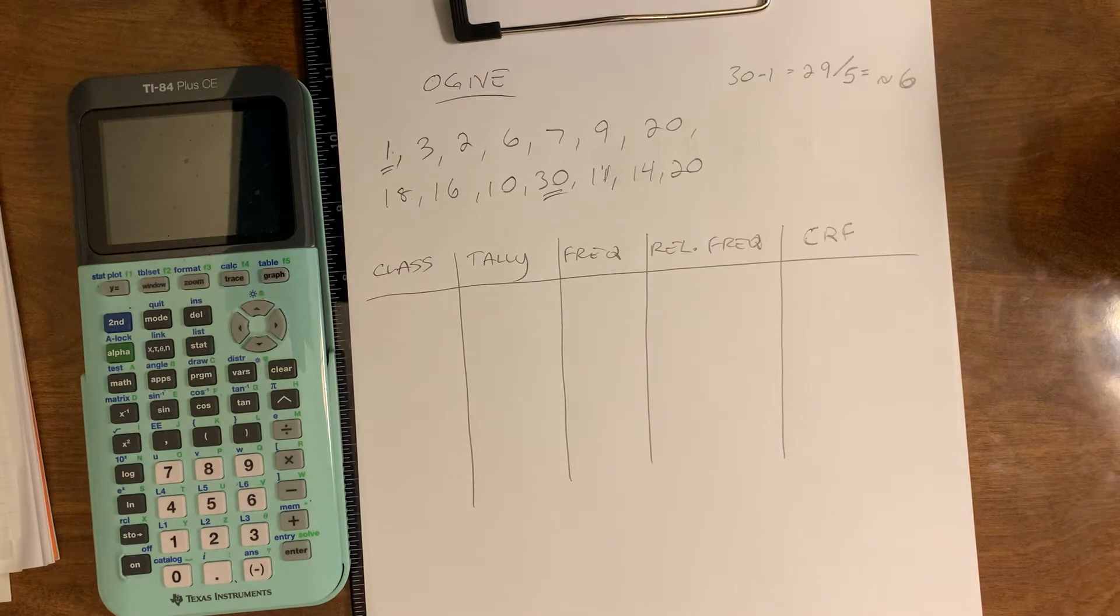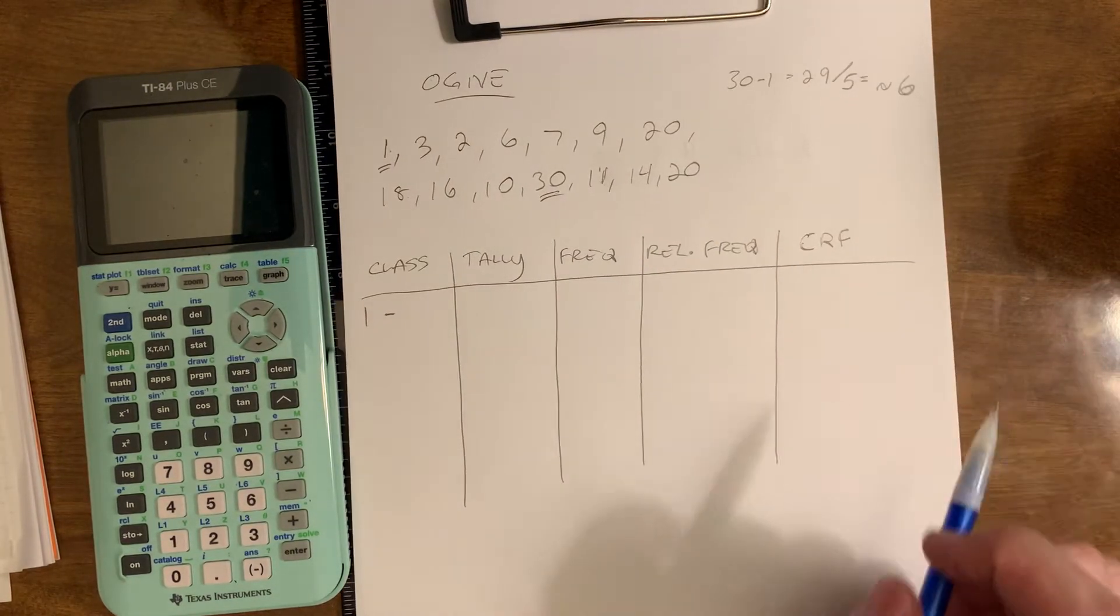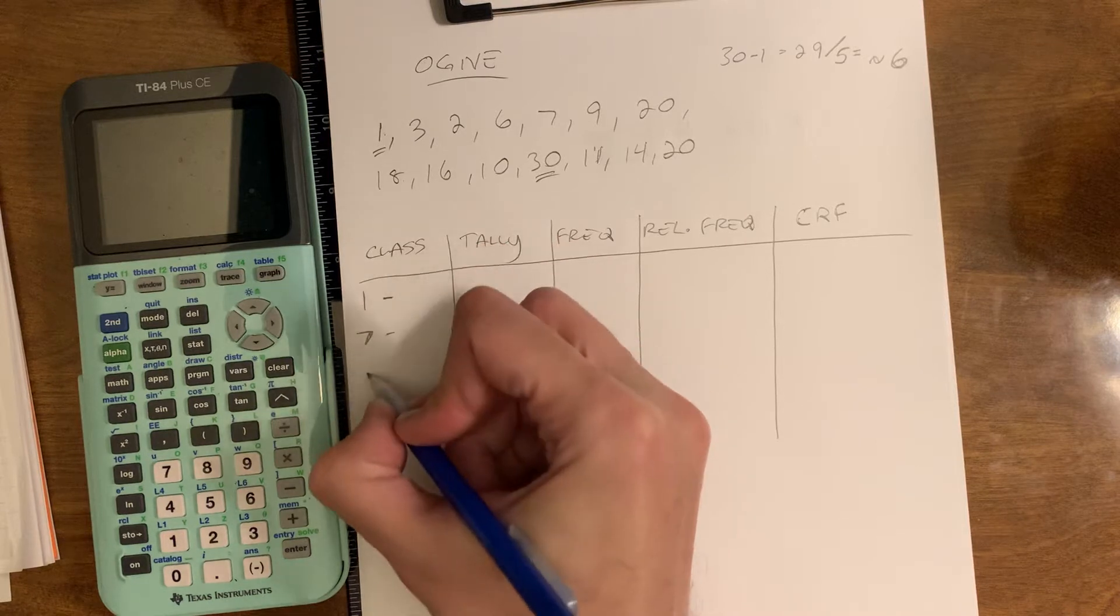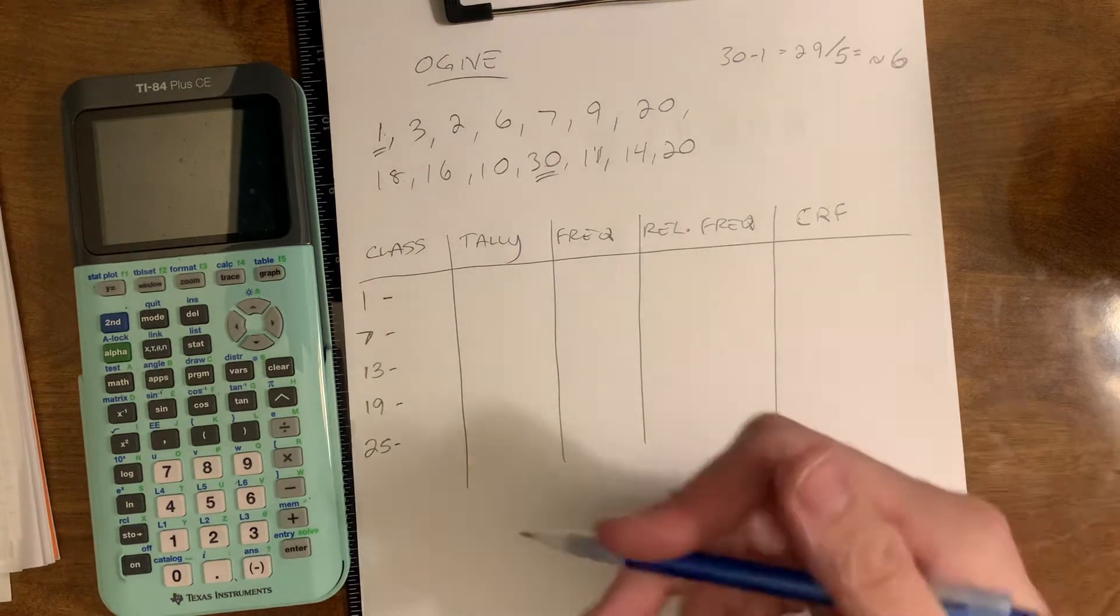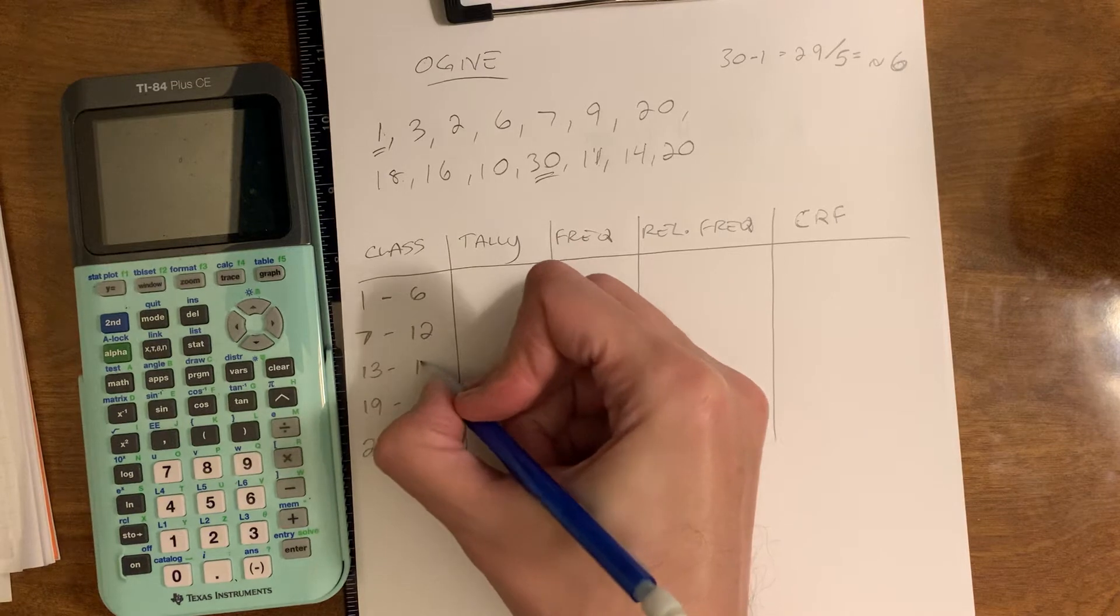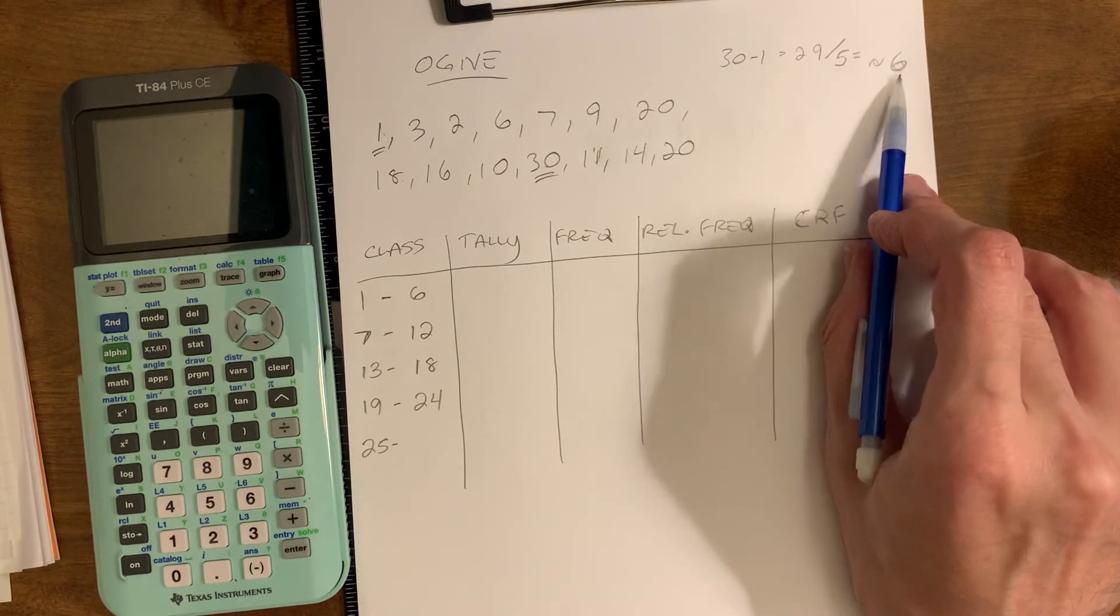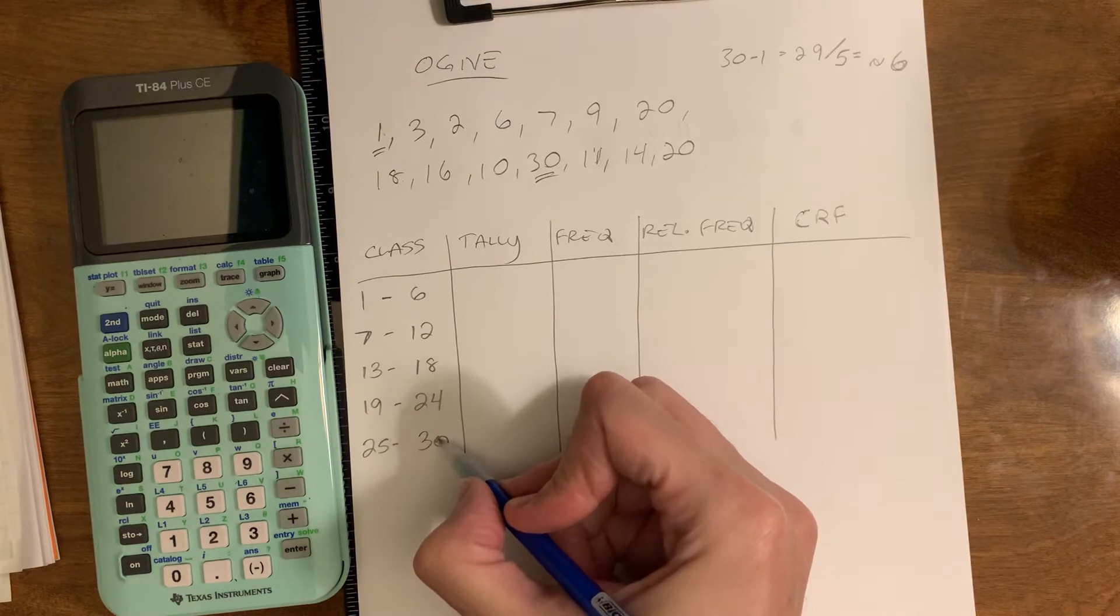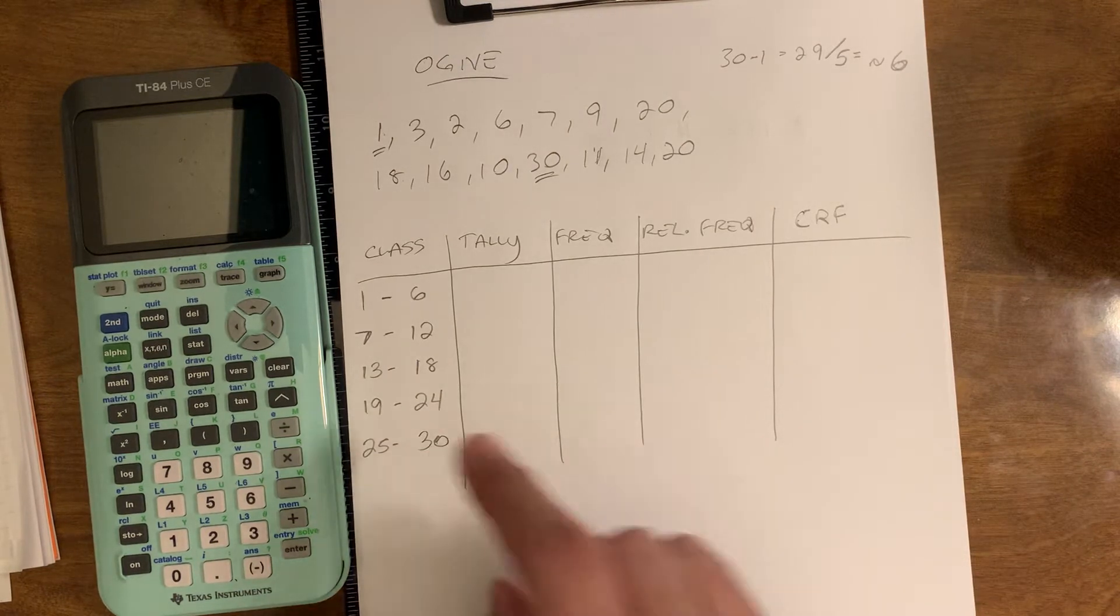Next up, we have to start building. So the first number is going to be the first number in sequence, which is 1, and it goes up to a number we'll determine. Since 6 is our class width, we'll add 6 to 1 and get 7, and then 13, and then 19, and then 25. Then we'll backtrack to find the upper limits. So this one ends at 6, because that starts at 7, and then 12, 18, 24. And 24 plus 6 is 30. It just so happens that that's also the upper value in our distribution.